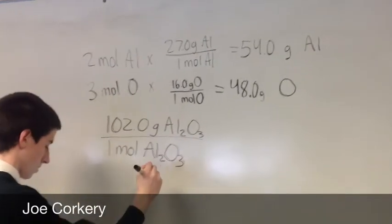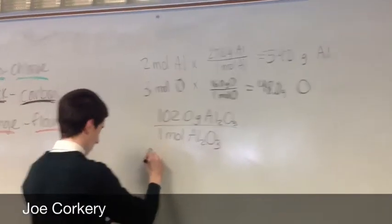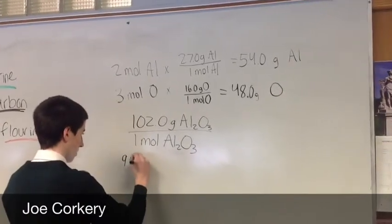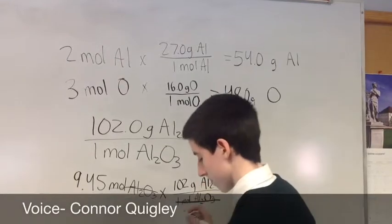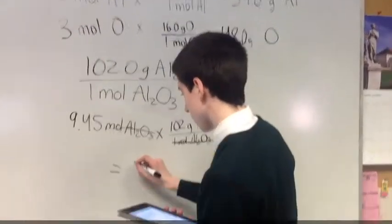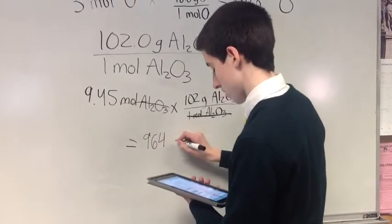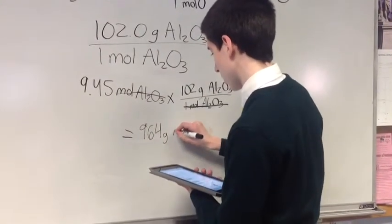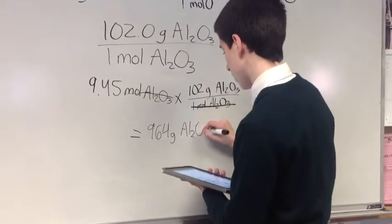Here, Joe Corkery is determining the mass of one mole of aluminum oxide. First, he's identifying the conversion factor relating the moles of aluminum oxide to grams of aluminum oxide. Then, he's multiplying the number of moles by the conversion factor to get 964 grams of aluminum oxide.